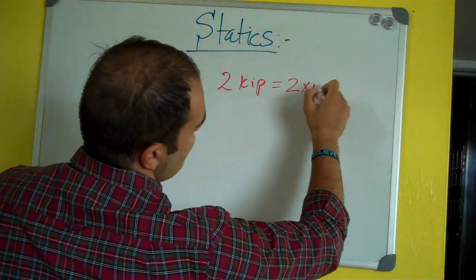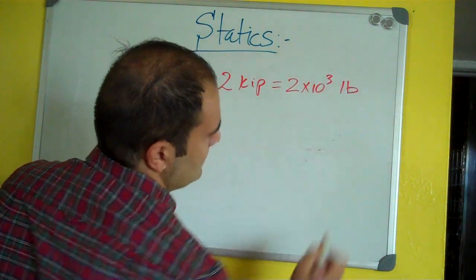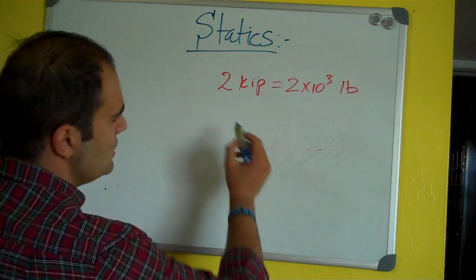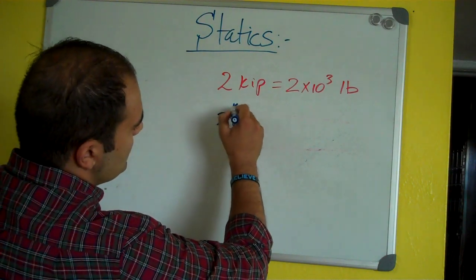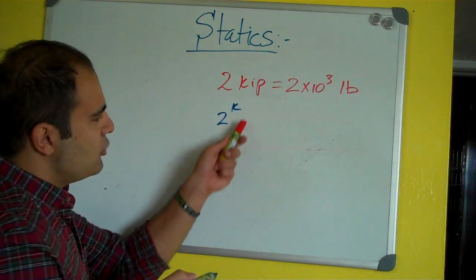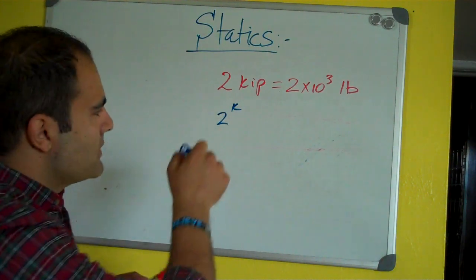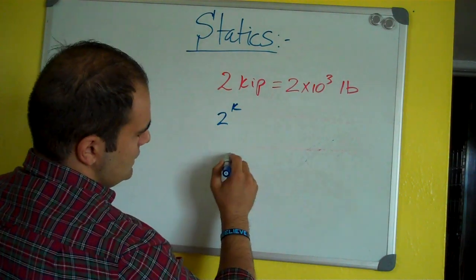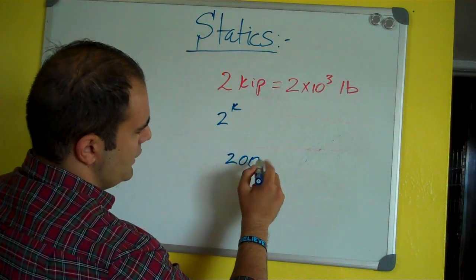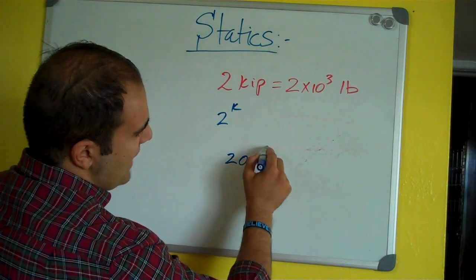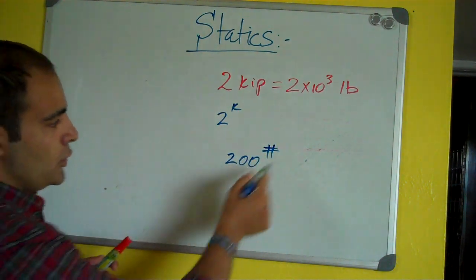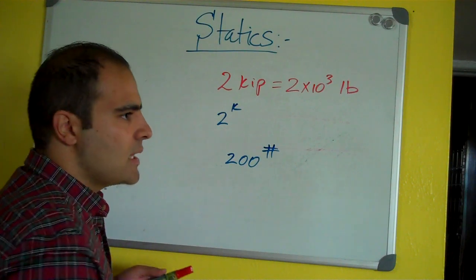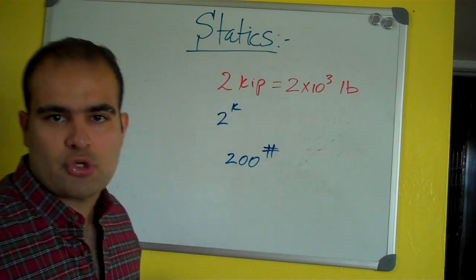And if you see me, just like, FYI, if you see me doing two kip like this, it's pretty common for structural engineers to put their unit superscript. And if you're seeing me doing two hundred or two hundred pound like this, that's also common. We do a lot of sort of abbreviations, acronyms, superscript type of thing.